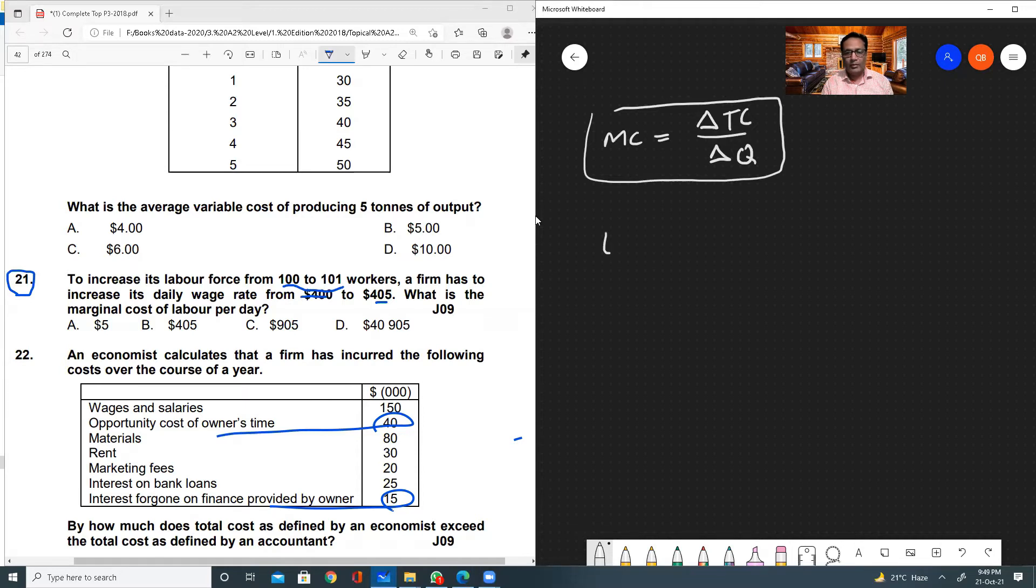We can write down number of labor or workers, then wages per worker, and then total cost of labor. When we employ 100 workers, wage rate is $400. So $400 multiplied by 100 will give us $40,000. This will be the total cost of 100 workers.